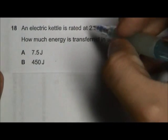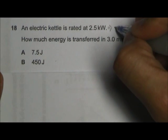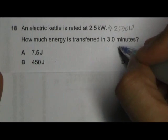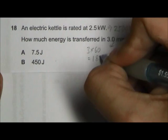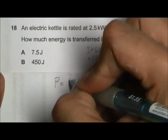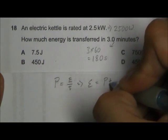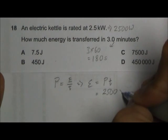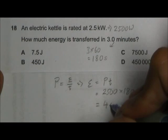In this question we are given the power which is 2.5 kilowatts, so we change it to watts: 2500 watts. And the time taken is three minutes, which we change to seconds: 3 times 60 equals 180 seconds. To calculate the energy we can use the formula power equals energy over time. So energy equals power times time. Power is 2500 and the time taken is 180, so we get 450,000 joules.